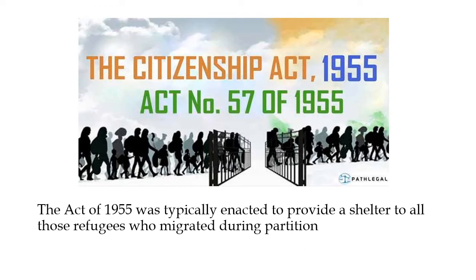The Citizenship Amendment Act 2019 was enacted to amend the law related to citizenship of India, whose parent act is the Citizenship Act of 1995. The Act of 1995 was typically enacted to provide shelter to all the refugees who migrated during the partition. This Act of 2019 was passed by the Parliament under Articles 10 and 11 of the Indian Constitution.